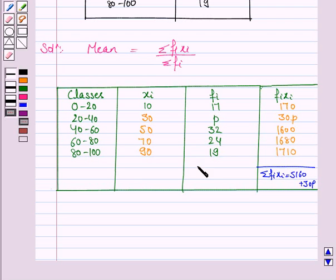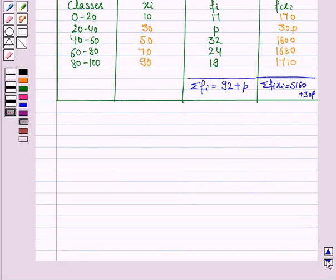Similarly we find summation FI. This is 17 plus 32 plus 24 plus 19 is 92 plus P. Now mean is 50.